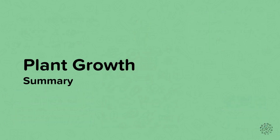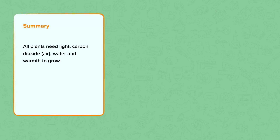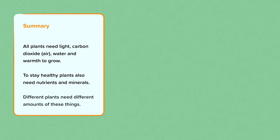Plant growth summary. In summary, all plants need light, carbon dioxide from the air, water and warmth in order to grow. Plants stay healthy by also getting nutrients and minerals from the soil. Different plants need different amounts of these different things.